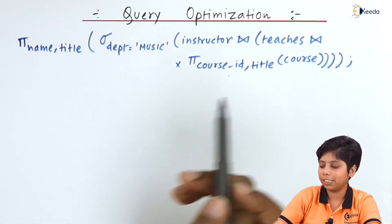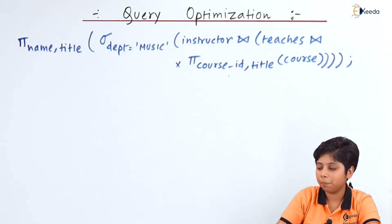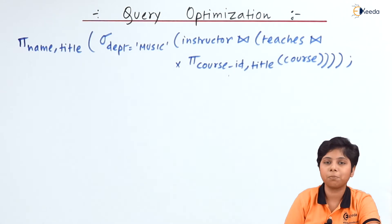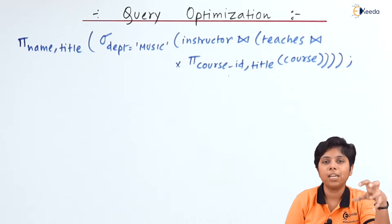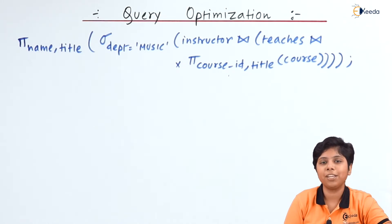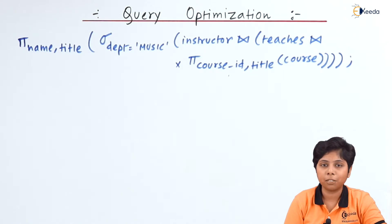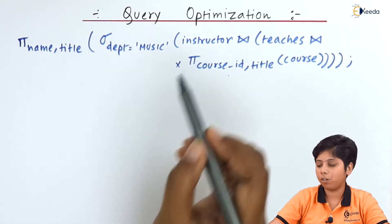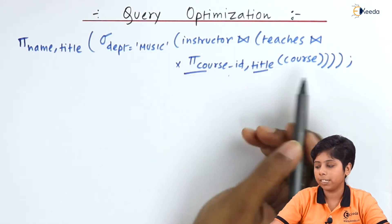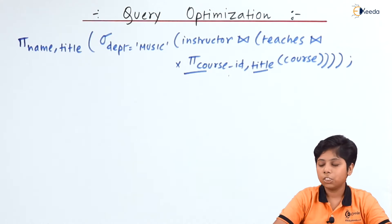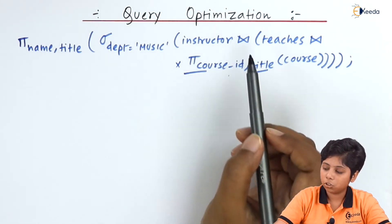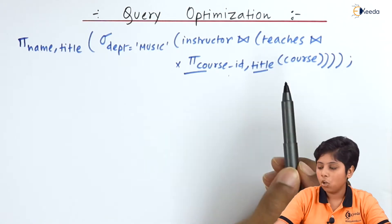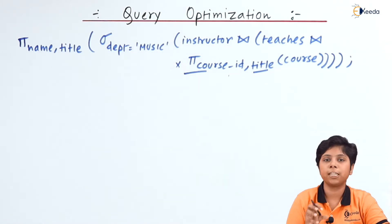Without the projection, it will give the name and title of instructors who teach in the music department with the music department's courses. However, an instructor may also teach in other departments, having course IDs from those departments too. So if we remove the projection of course ID and title over the relation course, those other department courses would also appear.